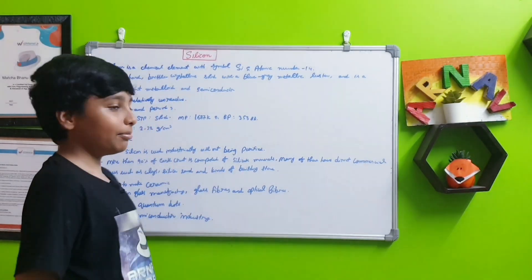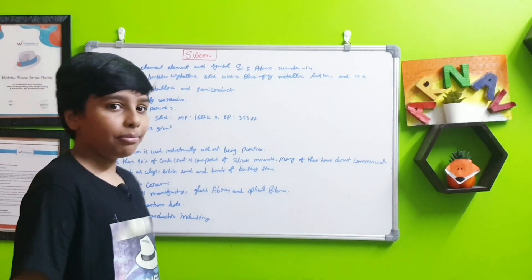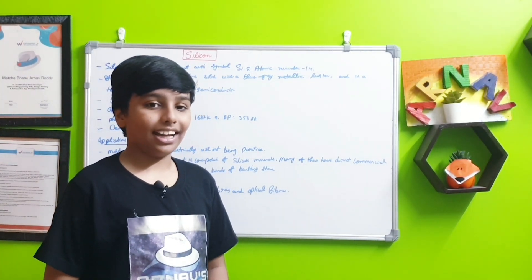Silicon is a chemical element with the symbol SI and atomic number 14, meaning it has 14 electrons as well as 14 protons.